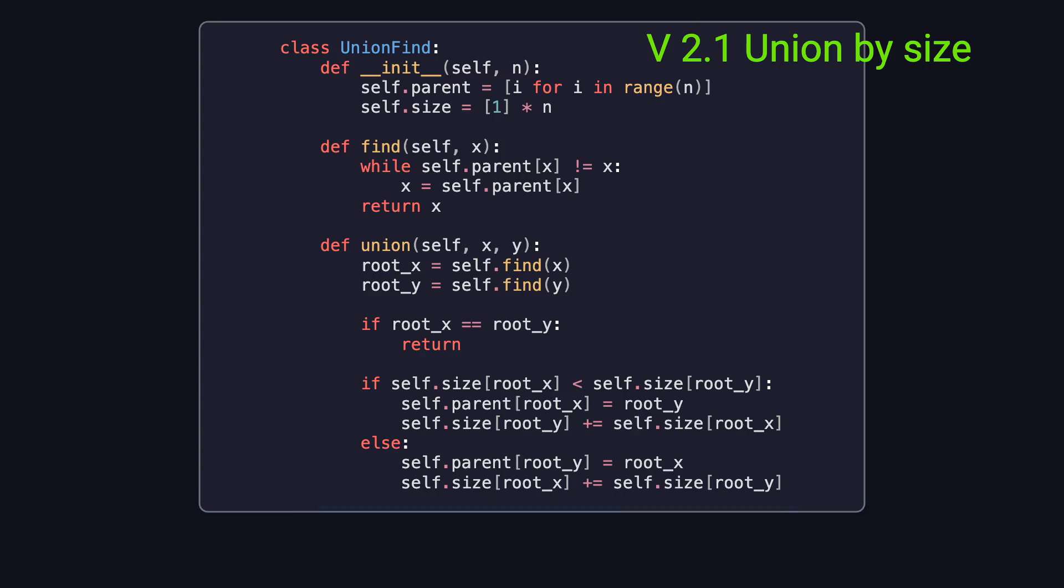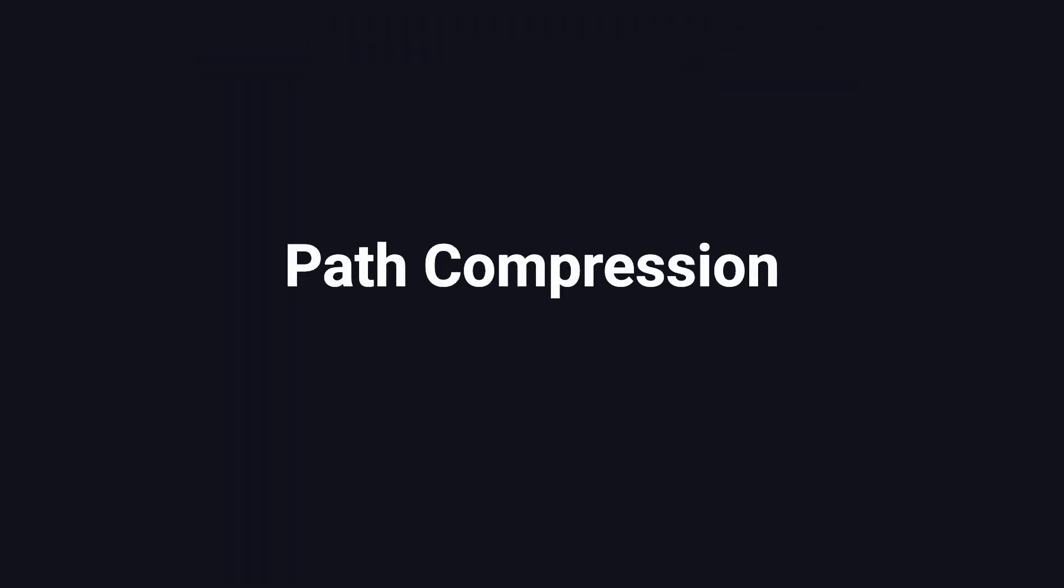Now you might be wondering, is version 2.0 or 2.1 the most efficient UnionFind implementation? Well, not quite yet. There's one more powerful optimization called path compression. Path compression can make the find operation extremely fast, almost constant time.